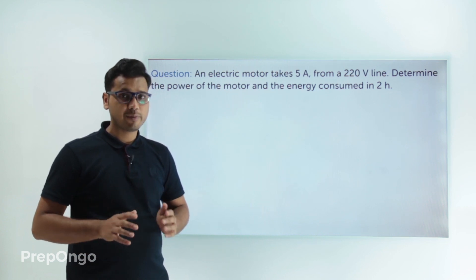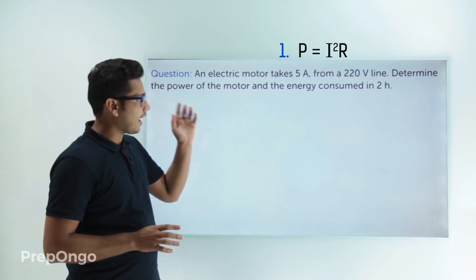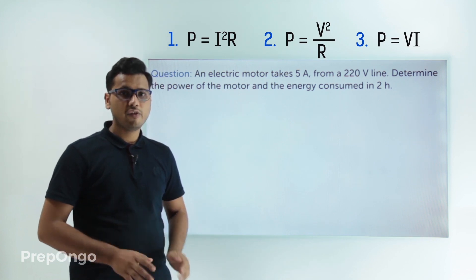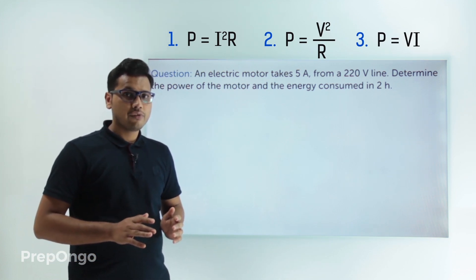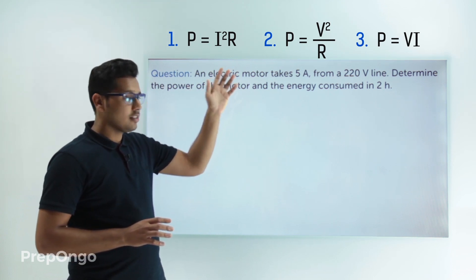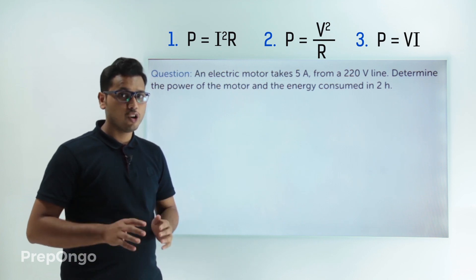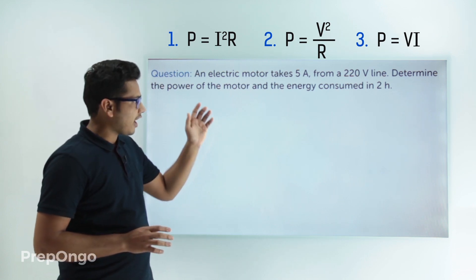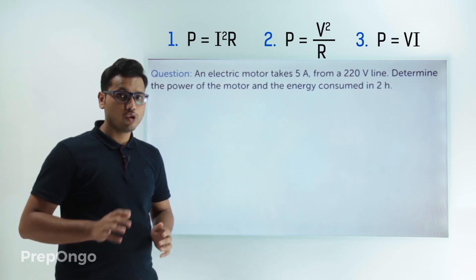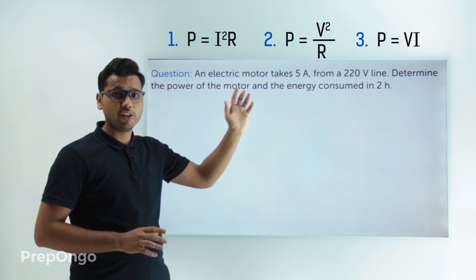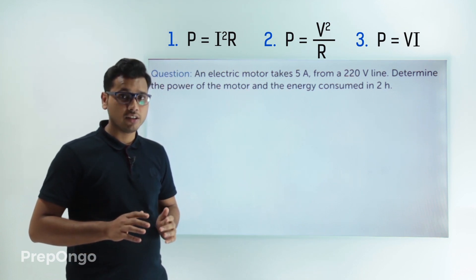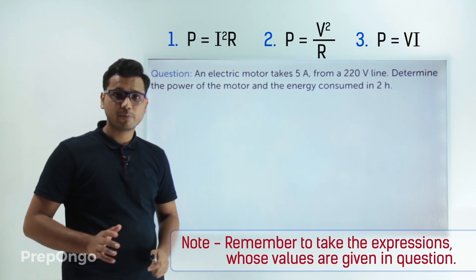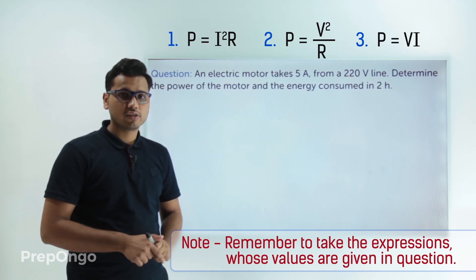Now we know that there were three expressions for electric power. First was I²R, second was V²/R, and third was V×I. If we look at all these three expressions, resistance is present in the first two. But in this question we are not given the value of resistance — we are only given the value of voltage and current. So we'll choose the third expression, P = V×I.